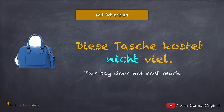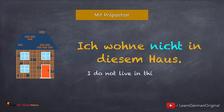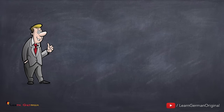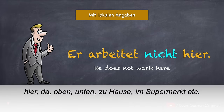Beispiele für andere Adverbien: hier, da, gestern, jetzt, später, gern, besonders, etc. Oder wenn es Präpositionen gibt: Ich wohne nicht in diesem Haus. Hier steht NICHT vor der Präposition. Oder auch lokale Angaben: Er arbeitet nicht hier. Hier steht NICHT vor der lokalen Angabe. Beispiele für lokale Angaben: hier, da, oben, unten, zu Hause, im Supermarkt, etc.